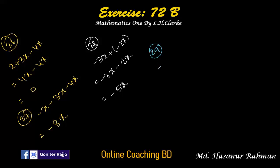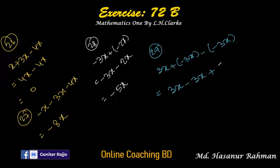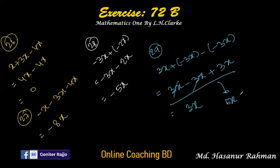Number 29 says 3x plus minus 3x minus minus 3x. Plus into minus is minus 3x; minus into minus is plus 3x. So we have 3x minus 3x plus 3x. 3x minus 3x is 0, plus 3x gives 3x. Alternatively, add the two positives: 3x plus 3x is 6x, minus 3x is 3x — same result either way.